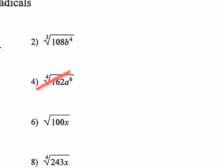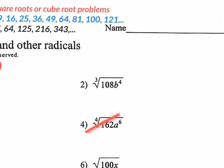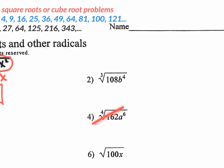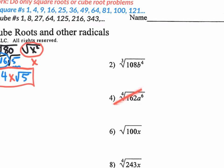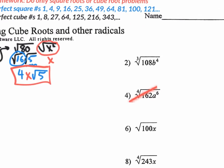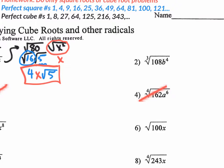Let's try number 2. We have the cube root, and I wrote the perfect cube numbers up here: 1, 8, 27, 64, 125, 216, 343. Those come from 2³=8, 3³=27, 4³=64, 5³=125, 6³=216, 7³=343, and so on.